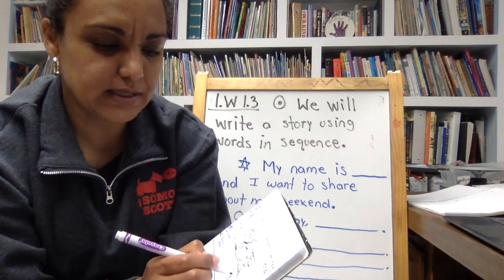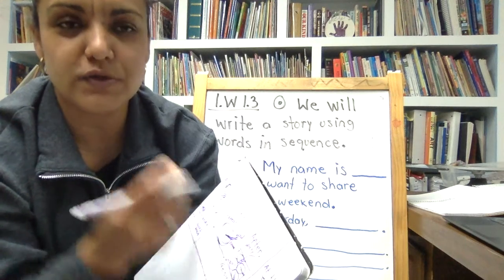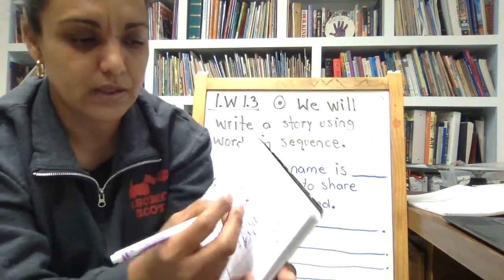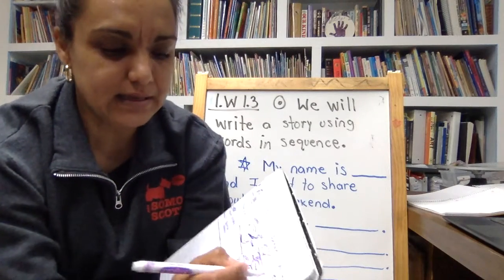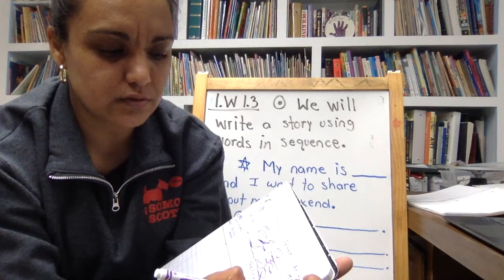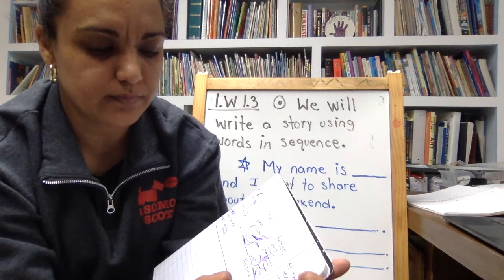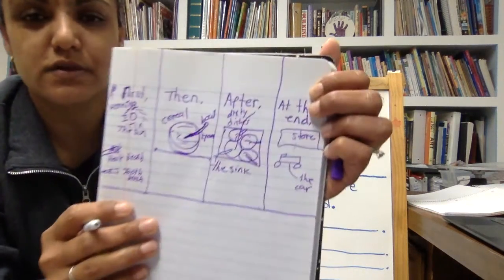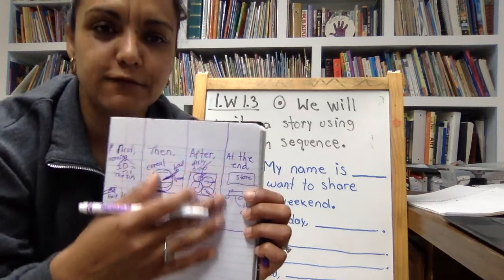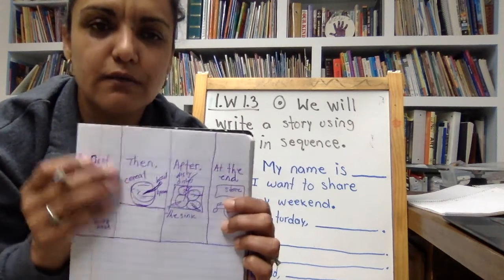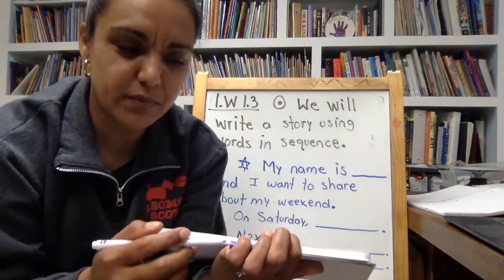After eating the cereal, what do you do? Let's say you help put the dishes in the sink — a few dishes with some spoons. So we're going to draw a sink with dirty dishes. What happened at the end? Let's say you went to the store. There's a car — you went to the store to buy groceries with your mom. You can write a lot by drawing your thoughts on paper first.